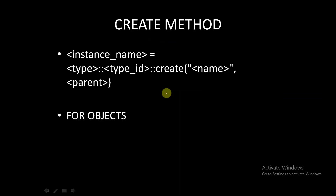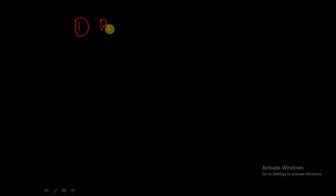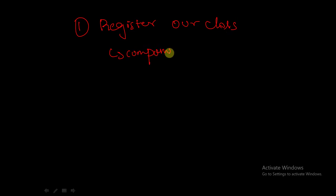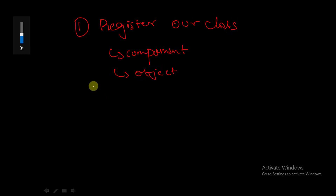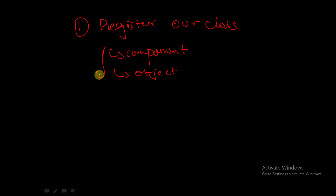The first step of the UVM factory is to register our class. If it is a component, use the macro related to components; if it is an object, use the macro relevant to objects; and if it is a parameterized class, use the macro related to parameterized classes. That is how we register our class.